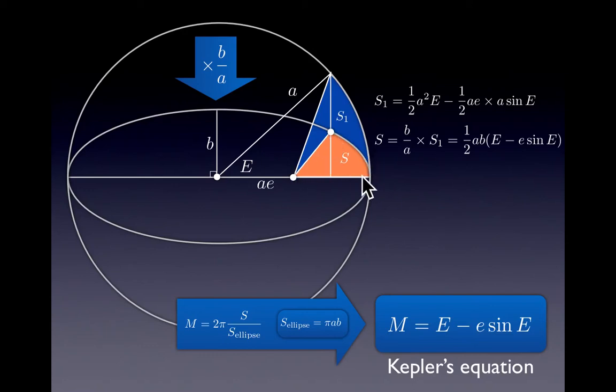As we said, this area is just the squashed version of this area, so it's s1 times b divided by a. And when we plug in the expression for s1, this is what we get.